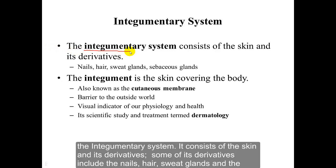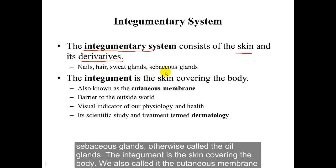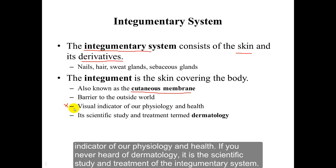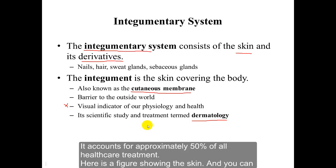The integumentary system consists of the skin and its derivatives. Some of its derivatives include the nails, hair, sweat glands, and the sebaceous glands, otherwise called the oil glands. The integument is the skin covering the body, also called the cutaneous membrane. It is a barrier to the outside world — that which separates the external from the internal environment. We often use it as a visual indicator of our physiology and health. Dermatology is the scientific study and treatment of the integumentary system, and it accounts for approximately 50% of all healthcare.